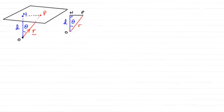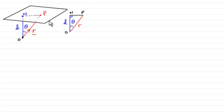Hi there. In this video, I want to show you another way that we can define the equation of the plane. It's called the scalar product form for the plane, or some people call it the dot product form for the plane.